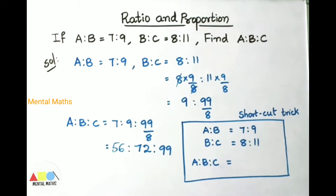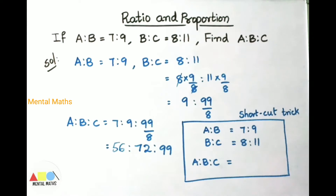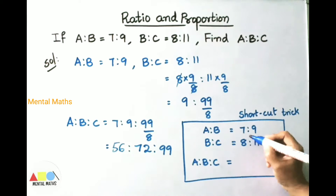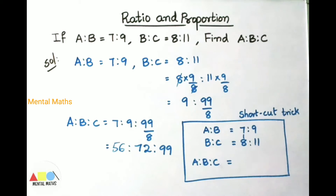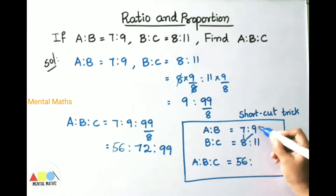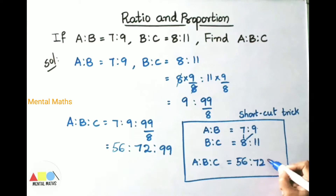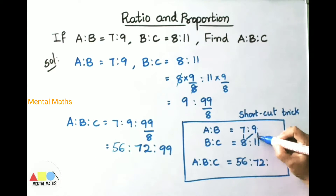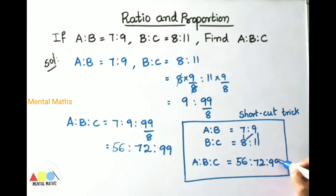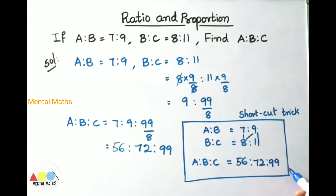Now I am going to show you the second method — a shortcut trick. First we write the given values: A is to B is 7 is to 9, B is to C is 8 is to 11. Multiply 7 into 8 to get 56, then 9 into 8 to get 72, then 9 into 11 to get 99. So directly A is to B is to C is 56 is to 72 is to 99. Both methods give the same answer. The second trick is useful when solving objective type questions.